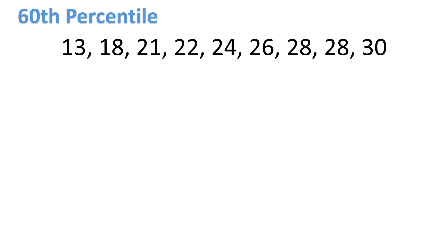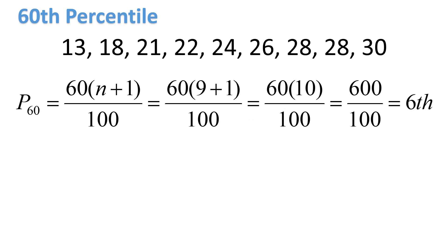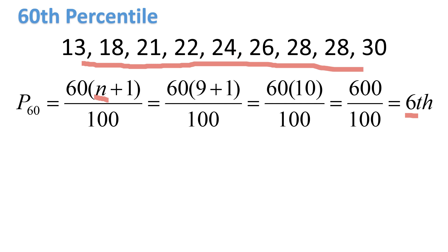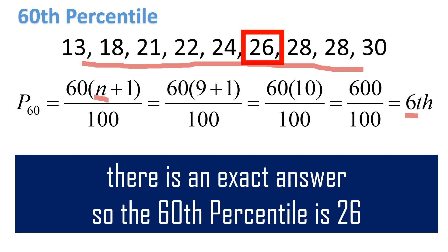The next example is the 60th percentile. Arrange the numbers from lowest to highest, then find the position of P sub 60: 60 × (N + 1) ÷ 100. There are 9 numbers, so 9 + 1 = 10; 10 × 60 = 600; 600 ÷ 100 = 6. This is still a whole number, so we count to the 6th position. That gives us 26 as our 60th percentile.